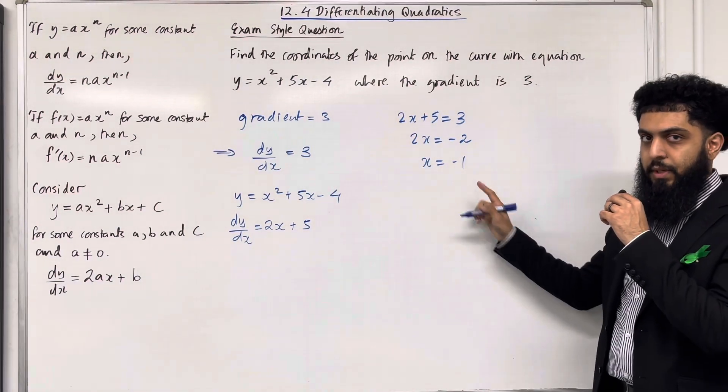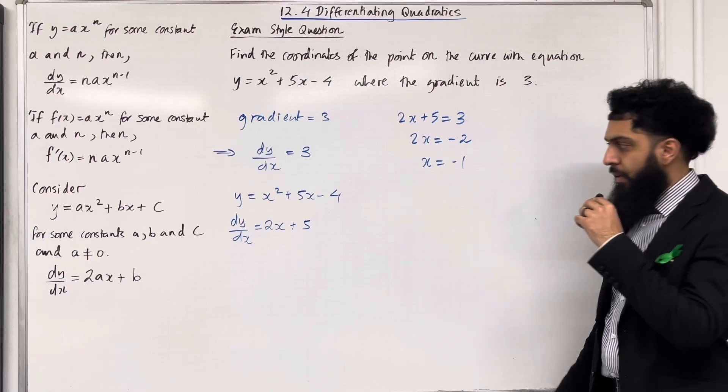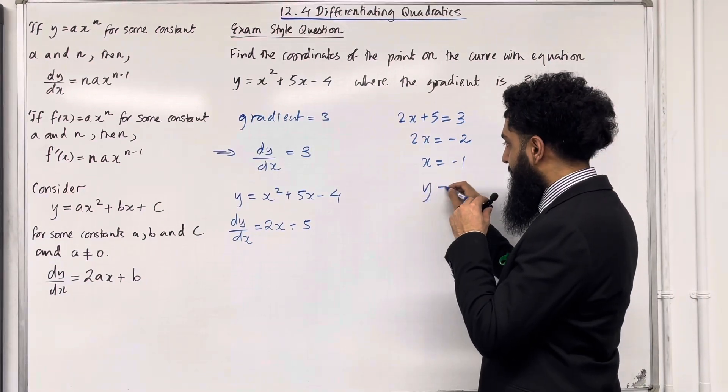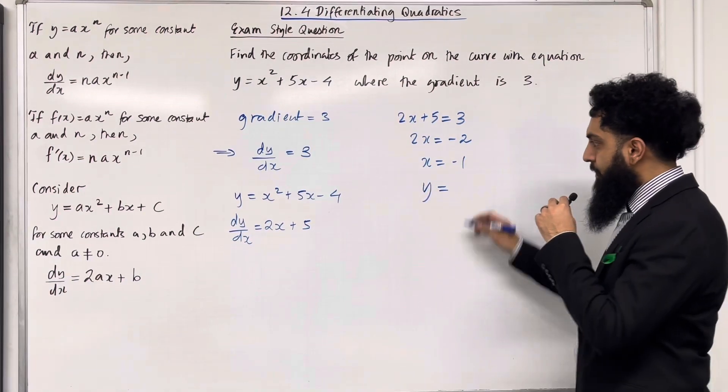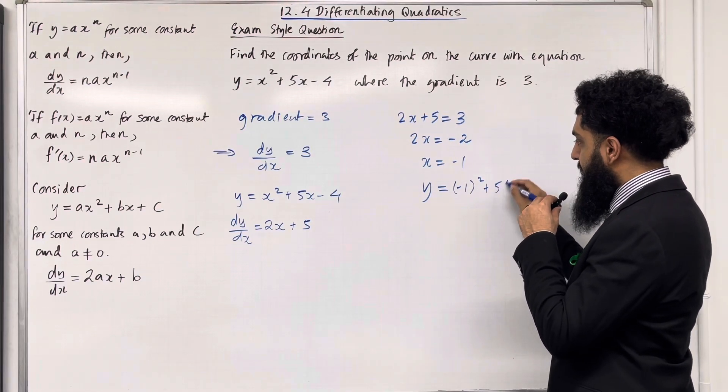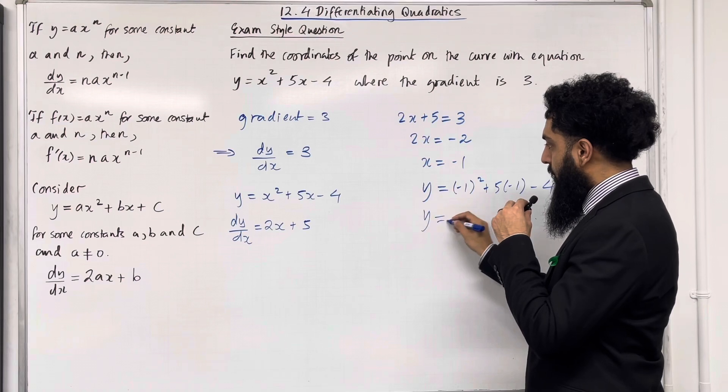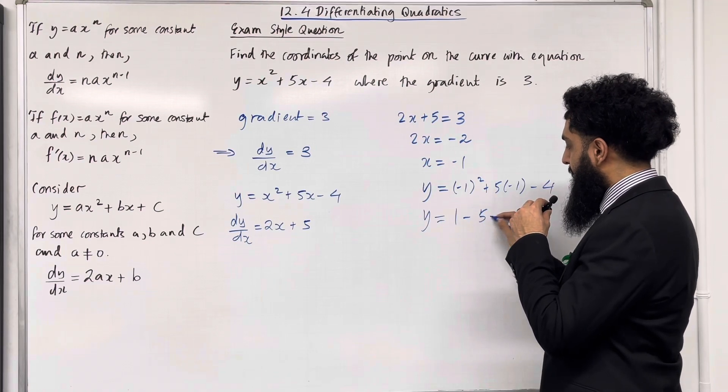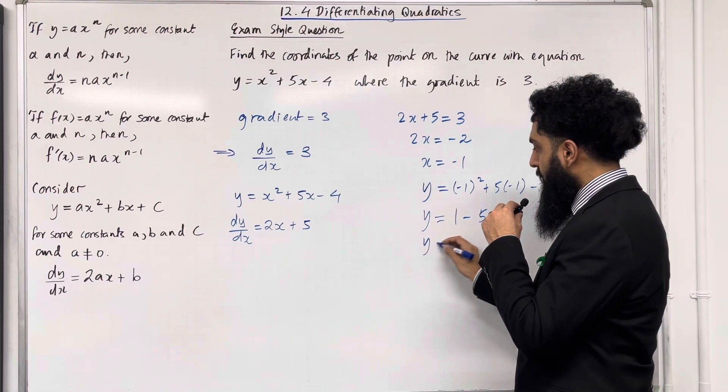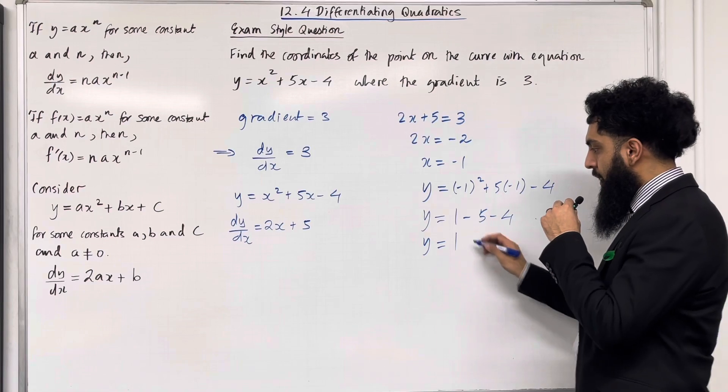This is the x coordinate. I need to now work out the y coordinate. So when x is equal minus 1, y is equal minus 1 squared plus 5 times minus 1 minus 4. So I've got y equals 1 minus 5 minus 4.